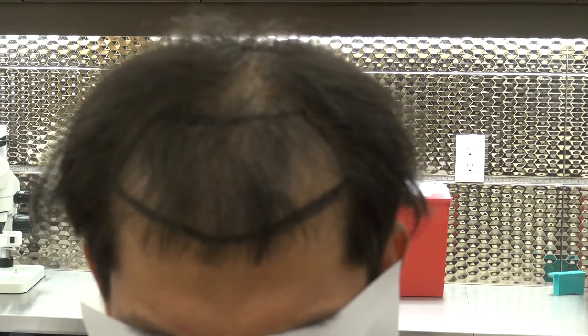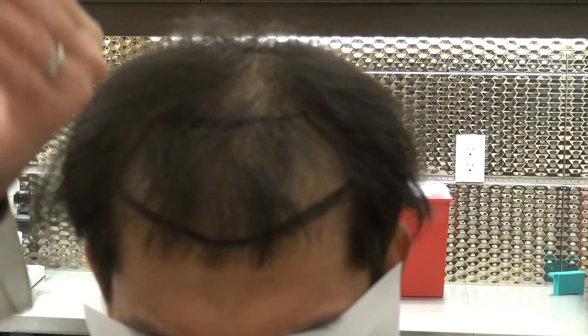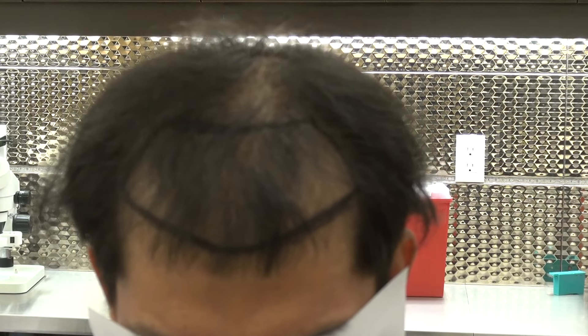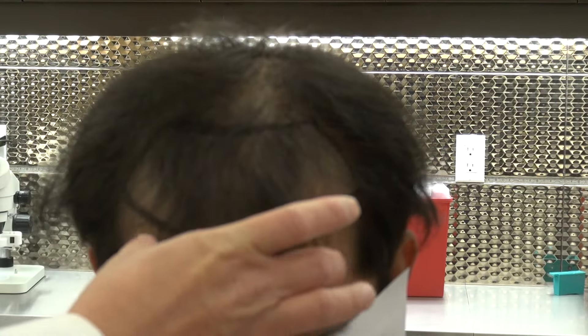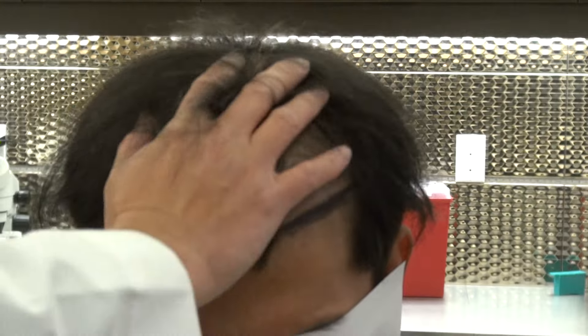Once we get the shape and zigzag down, we plan the precise angle—starting at 35-45 degrees in the front, changing as you go backward in different directions. Not only is the precise angle important, but also hair selection. We plan rows of single-hair grafts in the front, followed by two-hair, three-hair, and four-hair grafts in the back for volume.